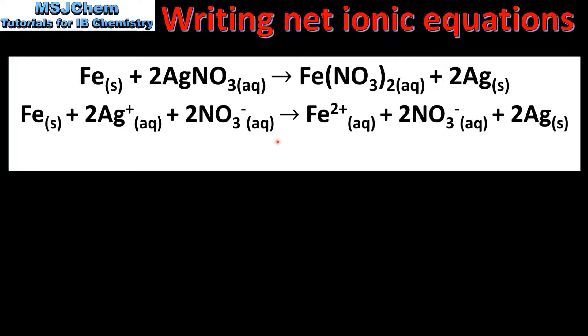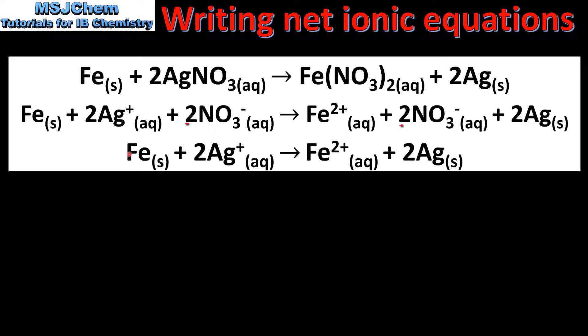In this equation the aqueous iron has been oxidized and silver ions have been reduced. The spectator ion is the nitrate ion. So when we cancel out the spectator ions we are left with a net ionic equation.